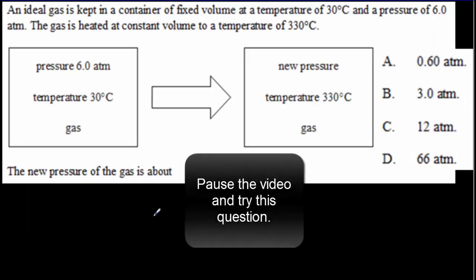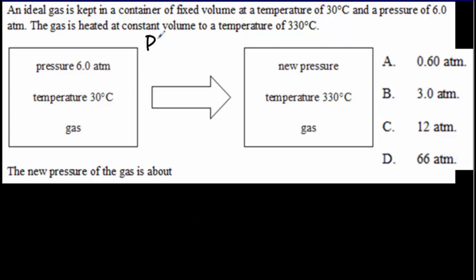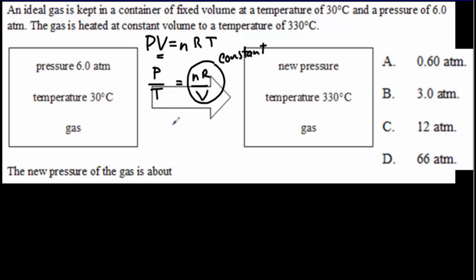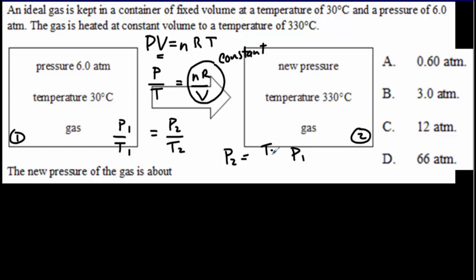Another typical IB question. Our ideal gas law is PV equals nRT. In this case the volume is constant, so I'm going to put everything that's constant on the right-hand side: P over T equals NR over V, which is simply a constant. That means the ratio of P to T in the first scenario has to equal the ratio of P to T in the second scenario. Solving for P2, that's going to equal P1 times T2 all over T1.